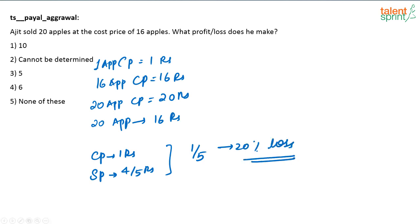Directly you can write it like this, far easier. Cost price of 1 apple is 1 rupee. He is selling 20 apples for 16 rupees, or 1 apple for 4 by 5 rupees. He is losing 1 by 5 rupees, which is 20 percent. 1 by 5 is 20 percent.